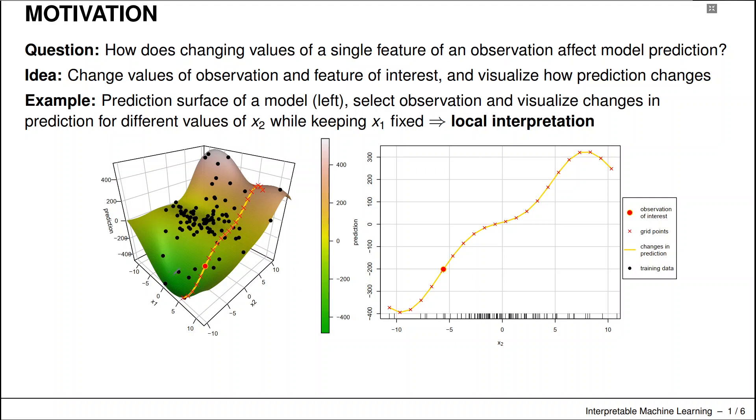On the left hand side here we have a prediction surface of a 2D model, so there are two features x₁ and x₂. This is easier to explain for a regression model so there will be some numerical outcome.